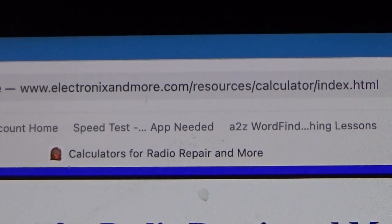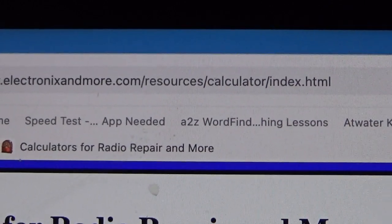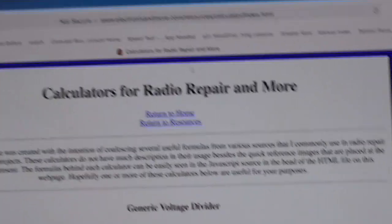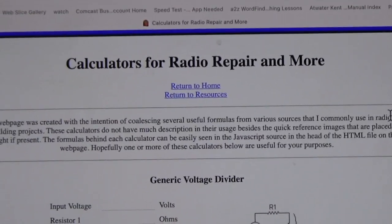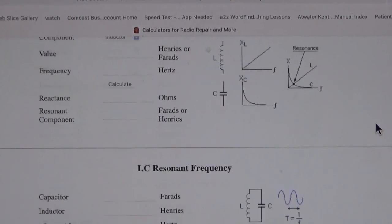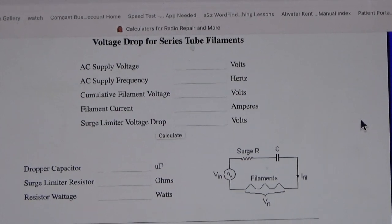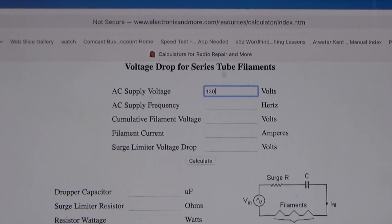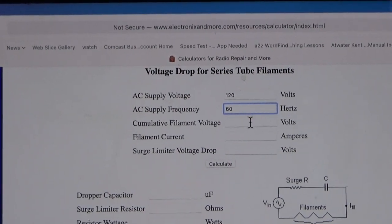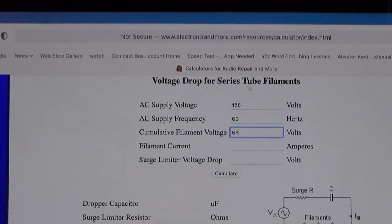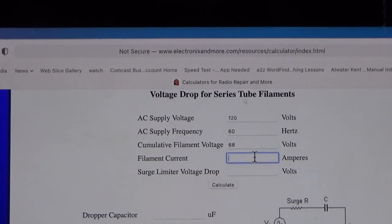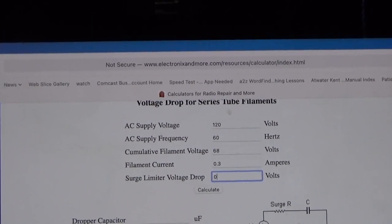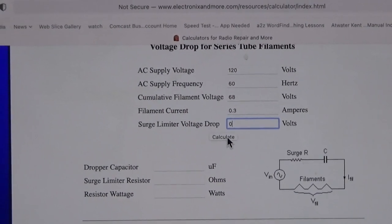The website we're going to use to figure this out is electronicsandmore.com. They have a resources page with a bunch of calculators. The calculators we're looking for—this is basically made for calculators for radio repair and more. If we go down we're going to find something that says voltage drop for tube filaments, right there. Let's plug in our numbers. We know the AC voltage supply is 120 volts, we're 60 hertz, our cumulative filament voltage is 68 volts, our current draw is 0.3, and we're not going to have a surge limiter resistor because we don't need it. Let's calculate it and see what we come up with.